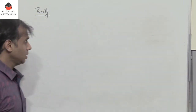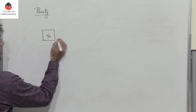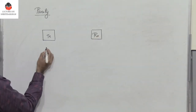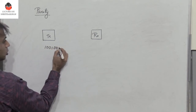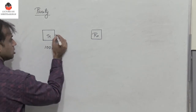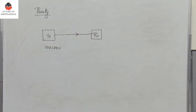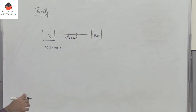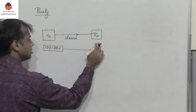When we have data which moves from the transmitter to the receiver, let us assume that I have an 8-bit data 10010011 which is moving from the transmitter to the receiver. This happens to be the channel, and the channel can be wired or wireless. So this 8-bit data moves along the channel and reaches the receiver.